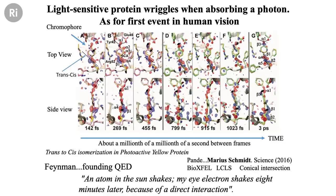The time resolution is the extraordinary thing. The time between one frame and the next is about a millionth of a millionth of a second — these are femtoseconds. Because our X-ray pulse is so brief, we can resolve the motion of this wriggling protein. It struck me that this is exactly relevant to something Feynman said in 1950 when quantum electrodynamics was being established — he said that when an atom in the sun shakes, my eye electron shakes eight minutes later because of a direct interaction.